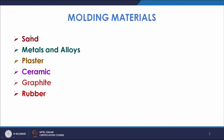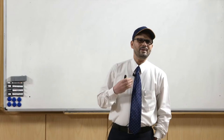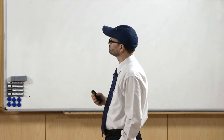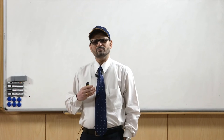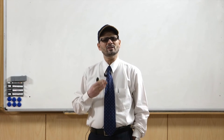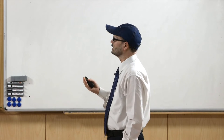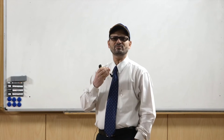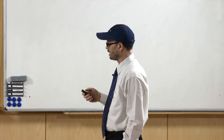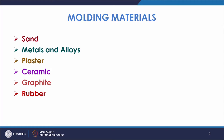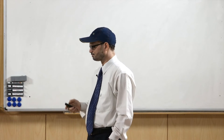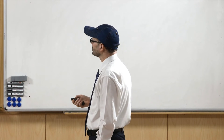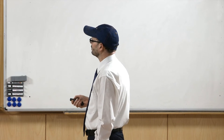Sand is used because we have plenty of sand around us. Another property of the molding material is that it should be able to withstand the high temperature of the cast metal — that property is also present in sand. So sand is the most used molding material, and we will mostly discuss molding material as sand. Sand is used as molding material for mass production.